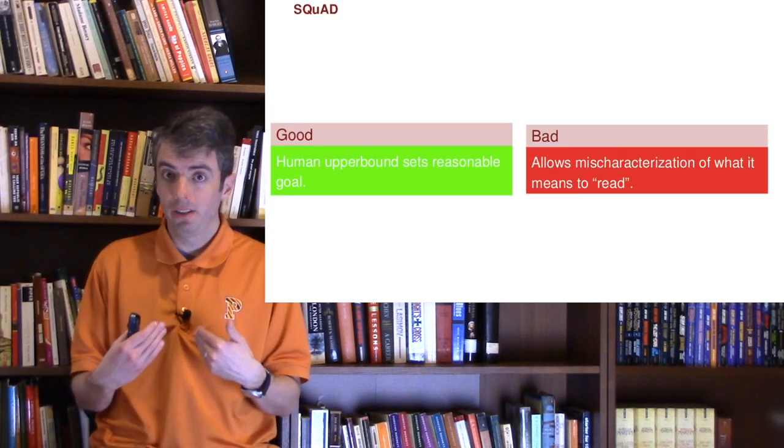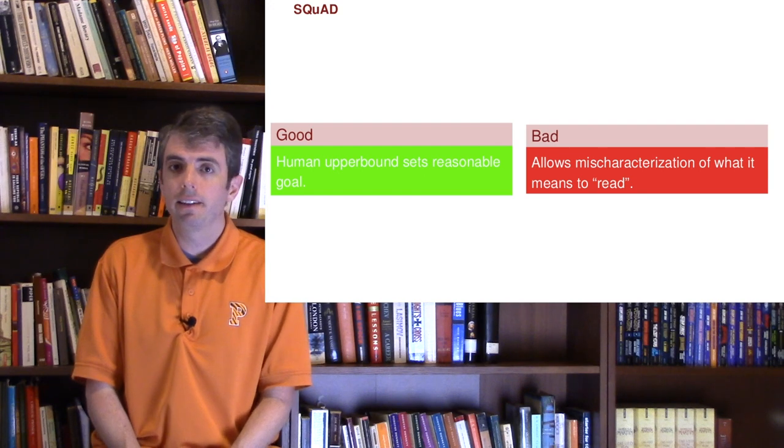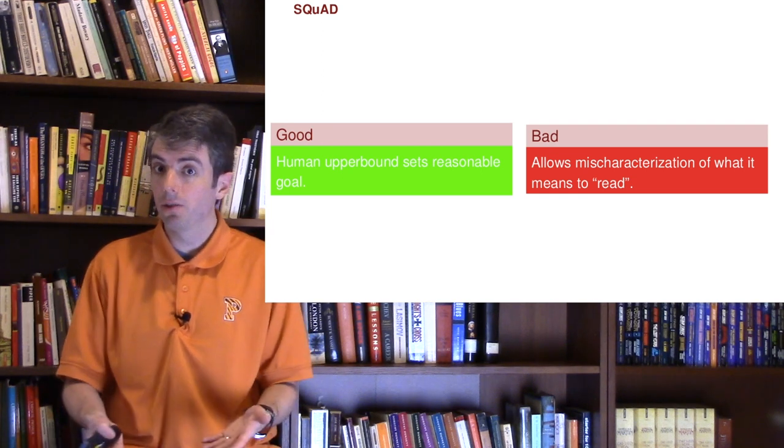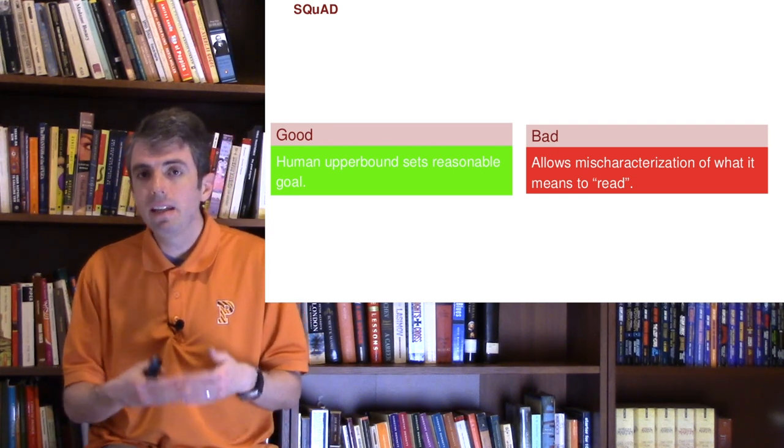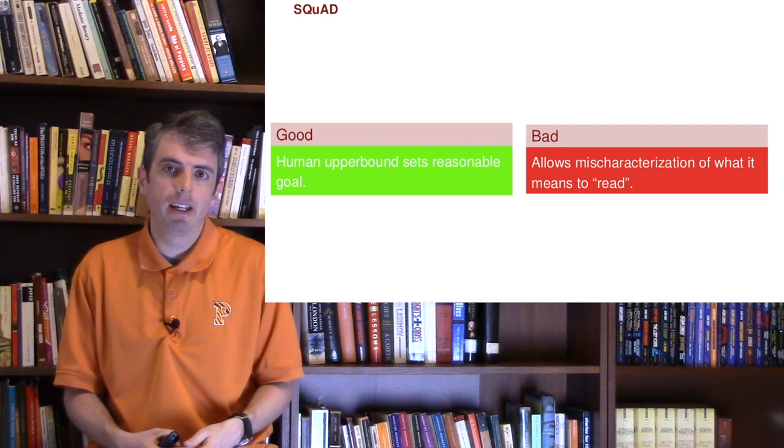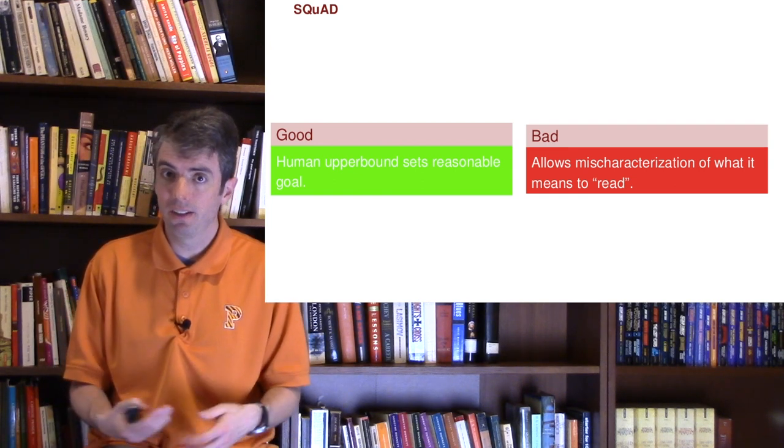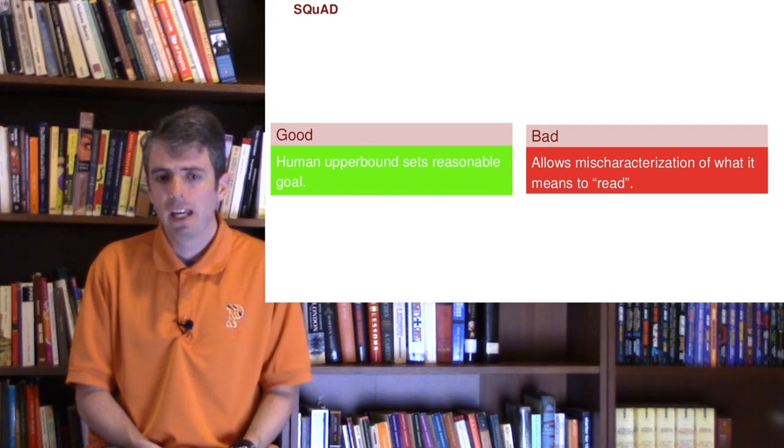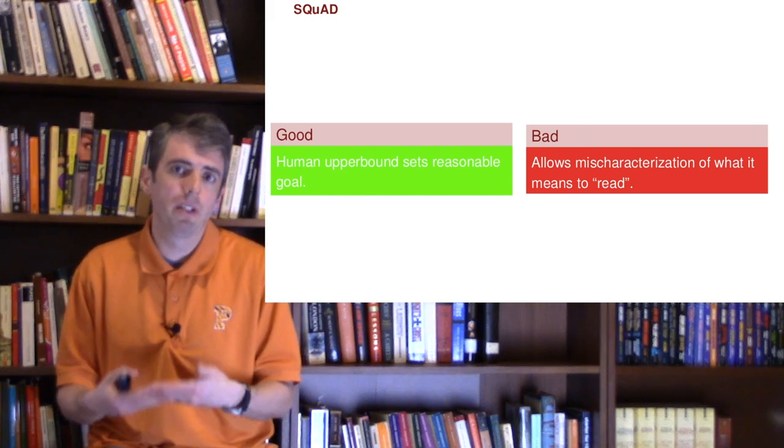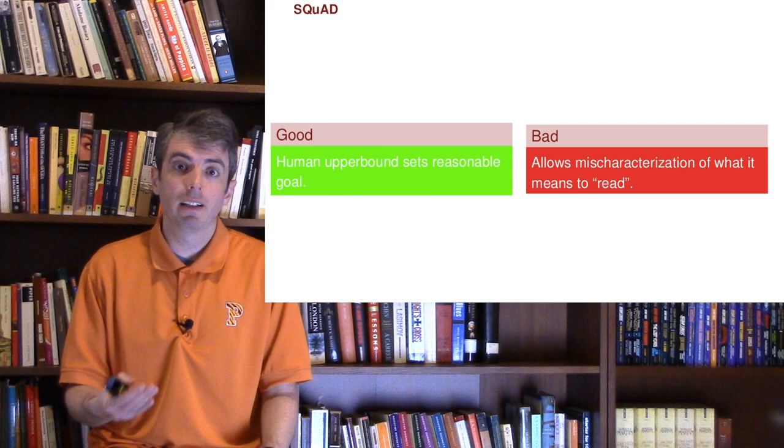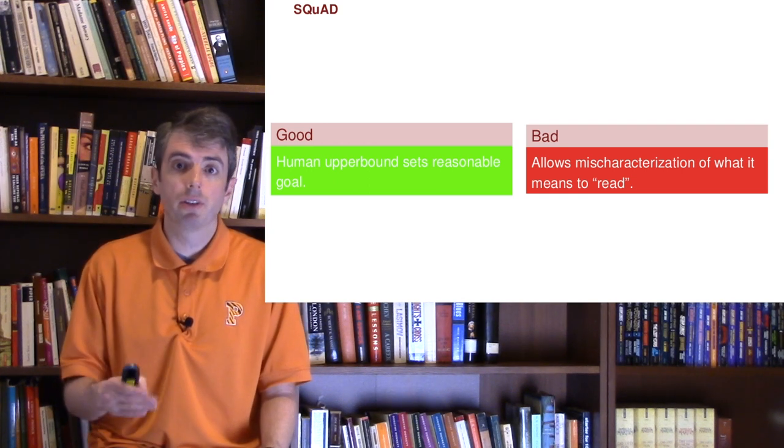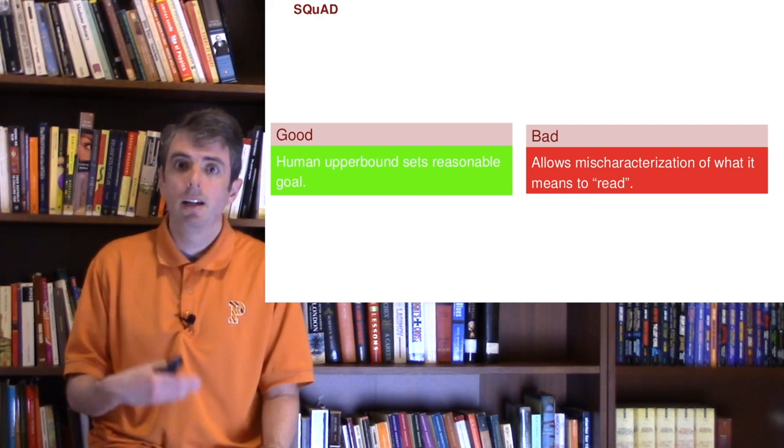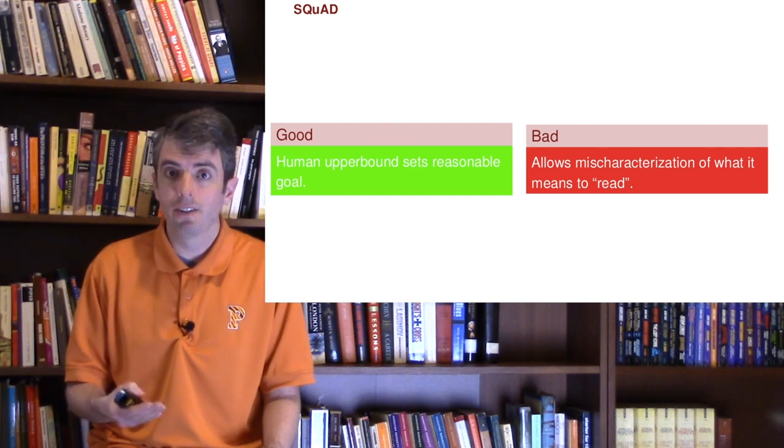This means that it doesn't allow answers that are latent in the text that don't correspond to a fixed span within the document. One personal pet peeve that I have with SQuAD is that there is a quote-unquote human upper bound. This isn't the fault of the researchers who created SQuAD, but there are many less well-informed news organizations or promoters of research that mischaracterize what it means to be near the human bound. It also mischaracterizes what it means to read a document. If machine learning systems are getting close to this human bound, it doesn't mean that computers are reading better than humans, it means that computers are doing a better job of highlighting particular passages better than underpaid crowd workers.